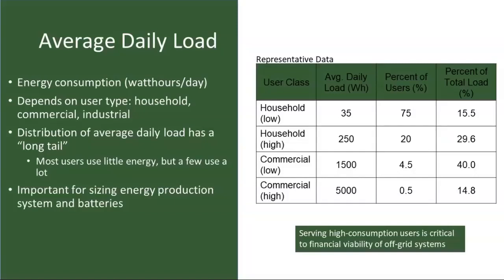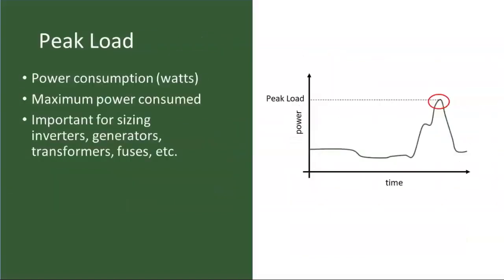Most practitioners are now adopting the approach of looking for what they call anchor loads — usually businesses or industrial facilities known to use a lot of energy. Once they've identified and agreed to connect these users, they then branch out and connect other houses who may or may not consume a lot. The peak load is also important — that maximum power we expect any given user to use — because when we design our inverter and generators, we need to know the peak value to plan around.